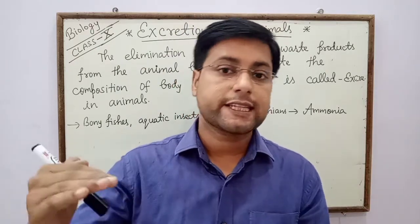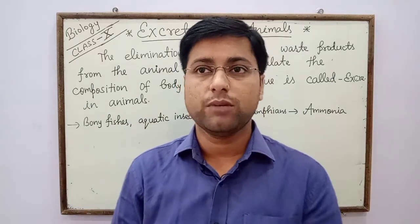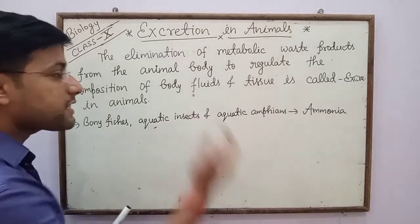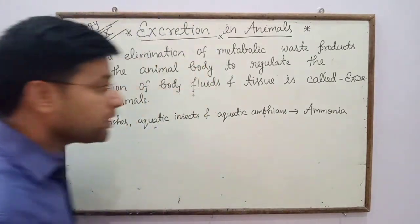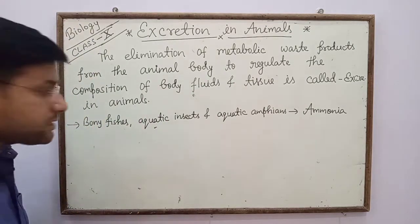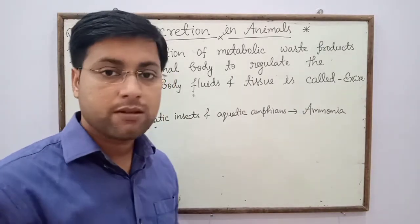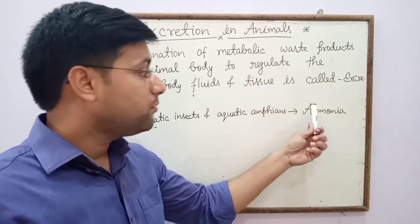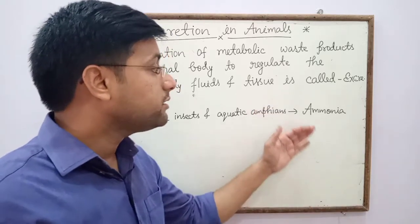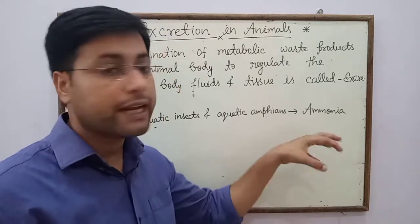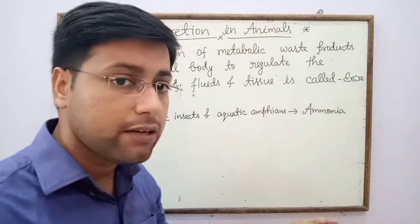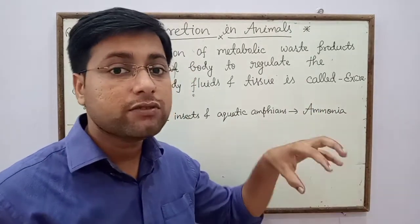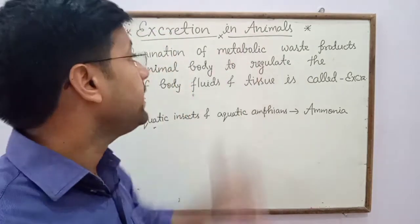In some animals, excretion occurs through simple diffusion — meaning some animals excrete their excretory products through simple diffusion. Commonly, some bony fishes, aquatic insects, and aquatic amphibians excrete ammonia as their excretory product through diffusion. Ammonia is more toxic and requires a large amount of water for its elimination in higher animals.